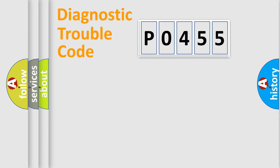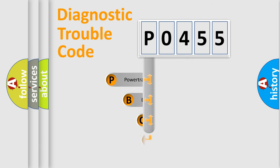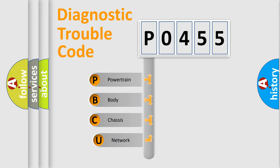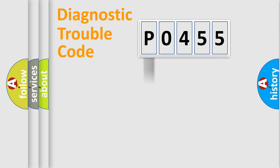First, let's look at the history of diagnostic fault code composition according to the OBD2 protocol, which is unified for all automakers since 2000. We divide the electric system of an automobile into four basic units: Powertrain, Body, Chassis, and Network.